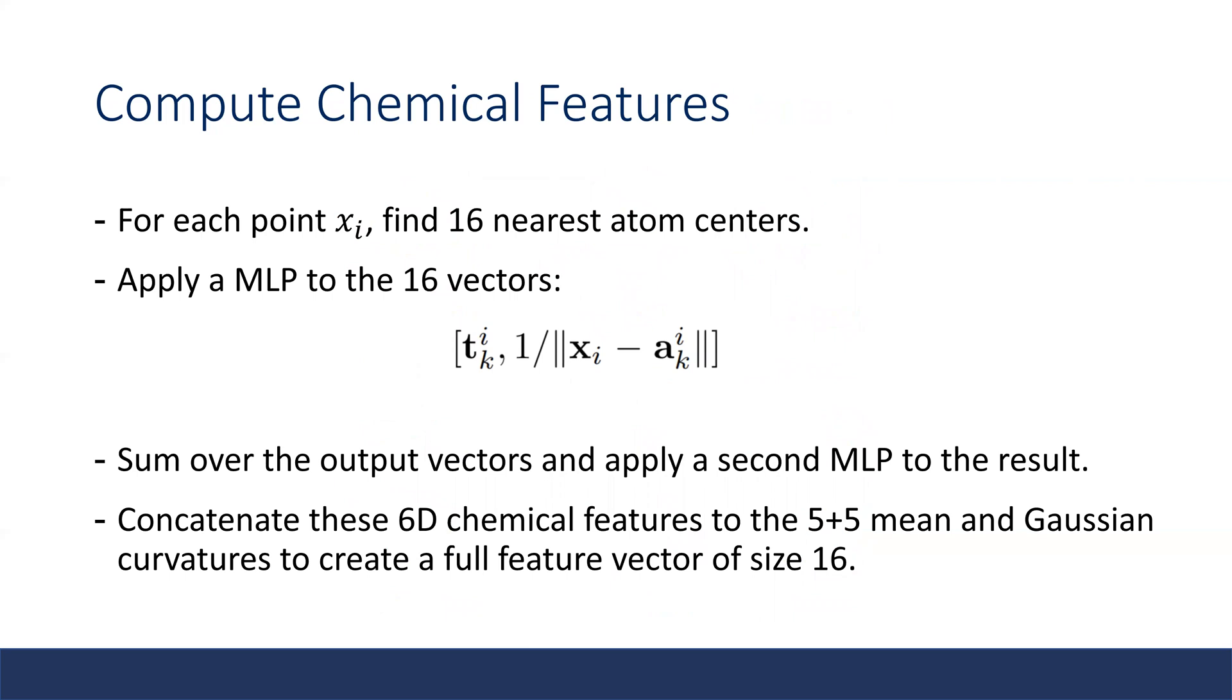After we sample the surface points, we compute the chemical features for each point. We find 16 nearest atom centers for each surface point XI and put the type as well as the inverse distance between the surface point and the atom center to an MLP. The output of the MLP is summed over and applied to a second MLP, which gives a 6D chemical feature. This is concatenated to a 10-dimensional curvature to get a full feature vector of 16.